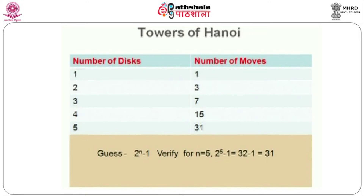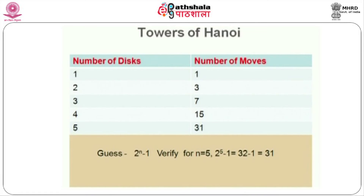We will take one more example of formulation. In the previous module we were talking about the Towers of Hanoi — there are 3 pegs and in peg A we have lots of disks, and we have to move the disks from one peg to the target peg using the intermediate peg. If there is one disk the number of moves is 1, for 2 disks the moves are 3, for 3 disks it is 7, for 4 disks it is 15, and when n equals 5 it becomes 31.